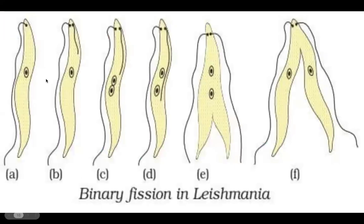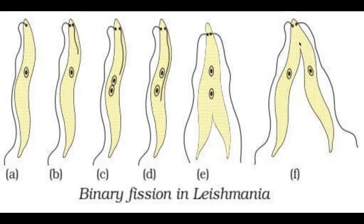Let's talk about Leishmania. Leishmania shows binary fission. The fission occurs in a specific plane. The nucleus divides first into two nuclei, then the cytoplasm divides, completing the division into two organisms. This is binary fission in the case of Leishmania.